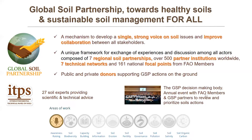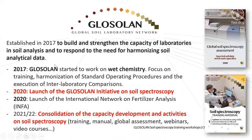The GSP has seven technical networks and 161 national focal points from the 197 FAO members. It also has the ITPS — the Intergovernmental Technical Panel on Soil — with 27 soil experts providing scientific and technical advice. The Plenary Assembly is the GSP main decision-making body that holds its annual event with FAO members and GSP partners to review and prioritize soil action. GLOSOLAN, the Global Soil Laboratory Network, is one of the seven technical networks of the GSP, established in 2017.